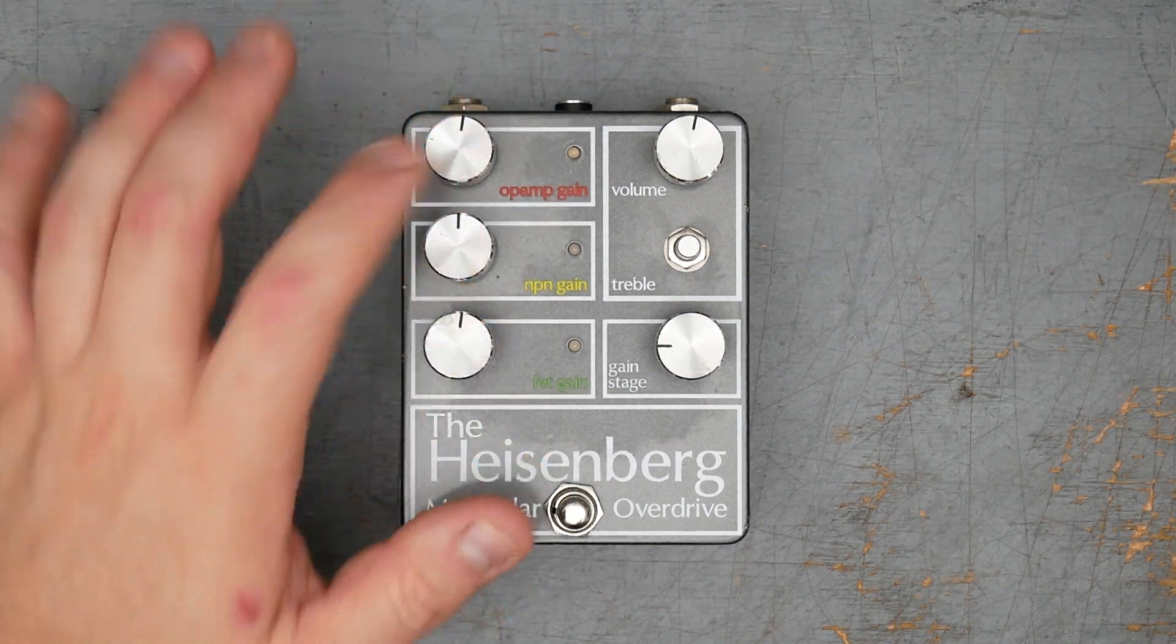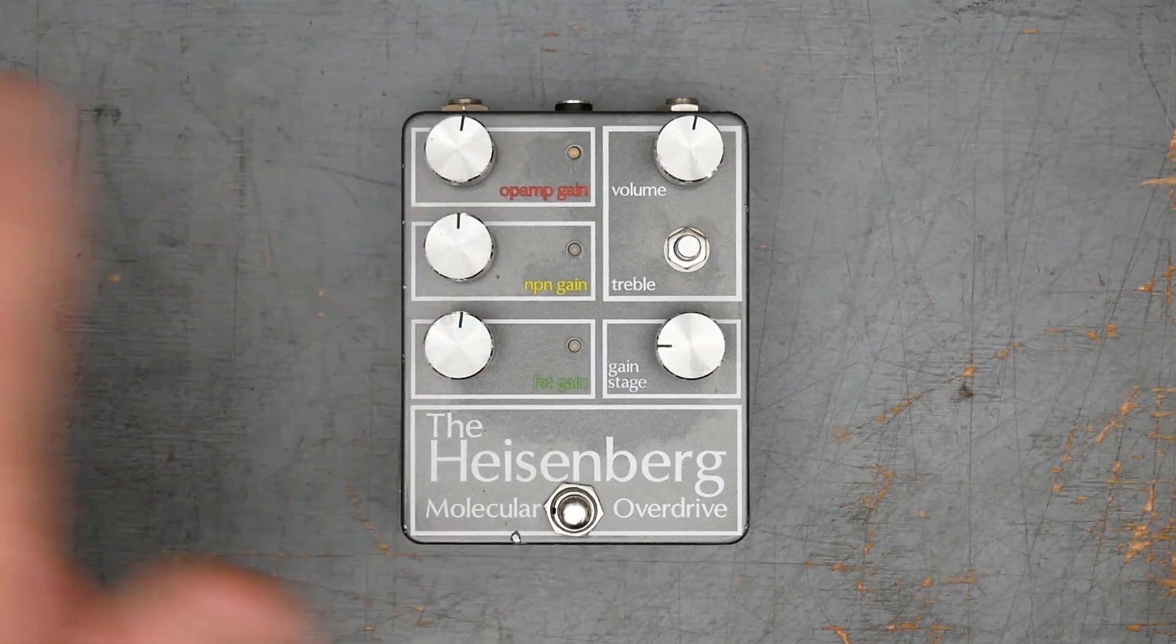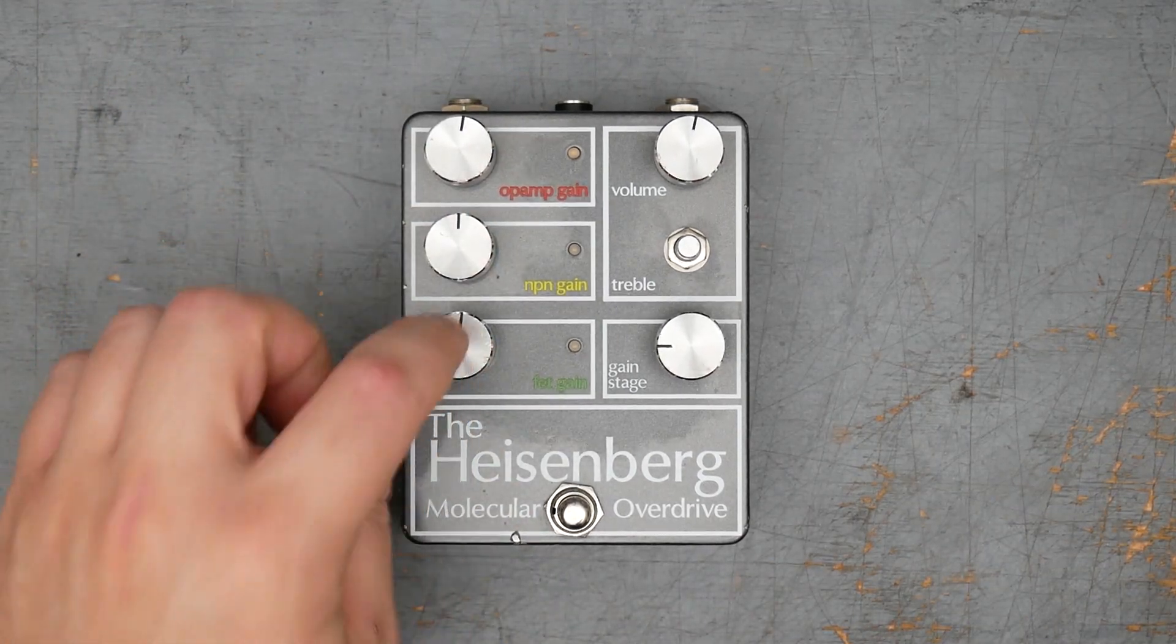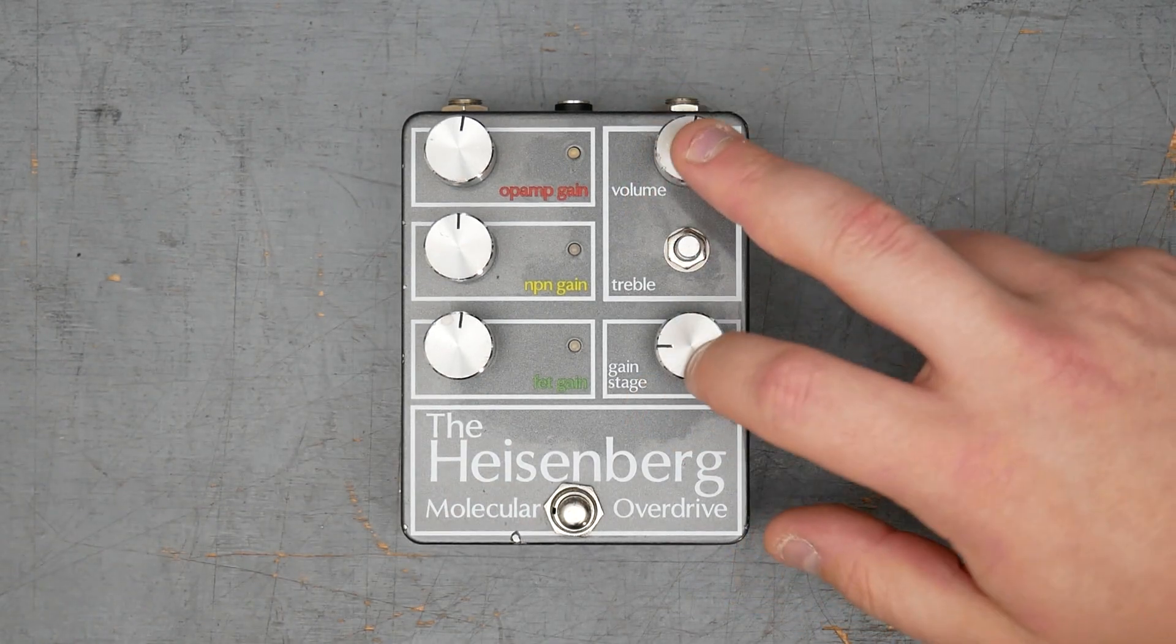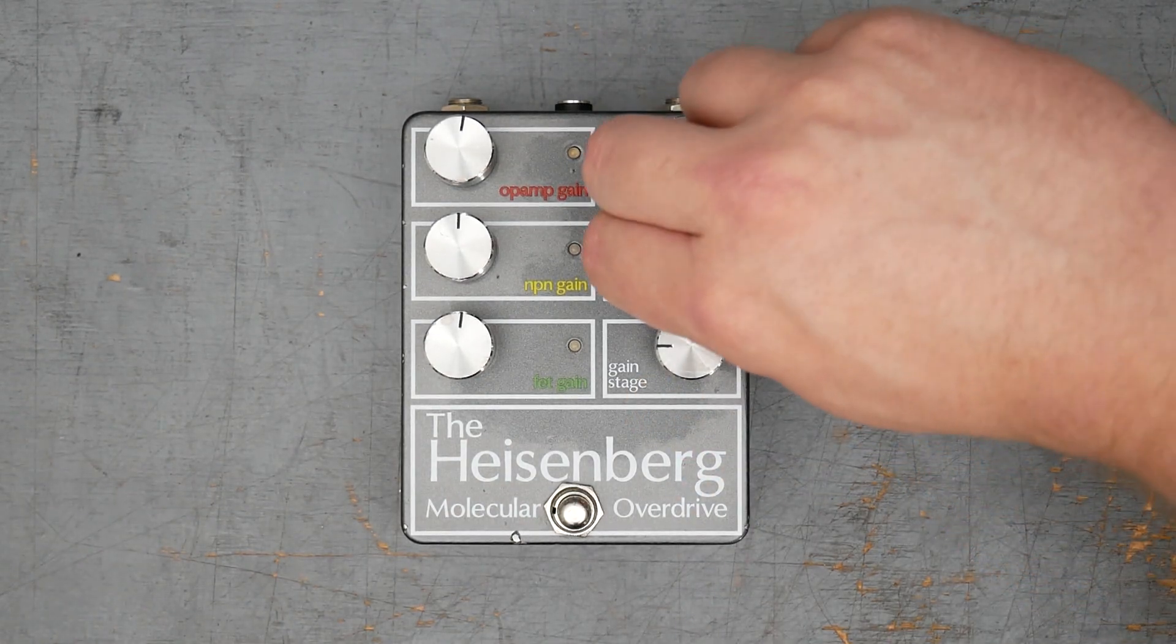Three effective gain stages here: an op-amp gain stage, an NPN BJT transistor gain stage, and a FET, an actual MOSFET gain stage. We have volume and gain control. The treble control obviously is here minus the knob.